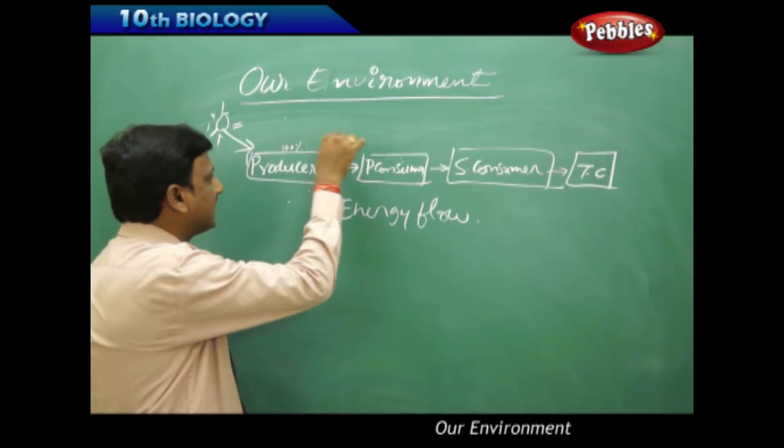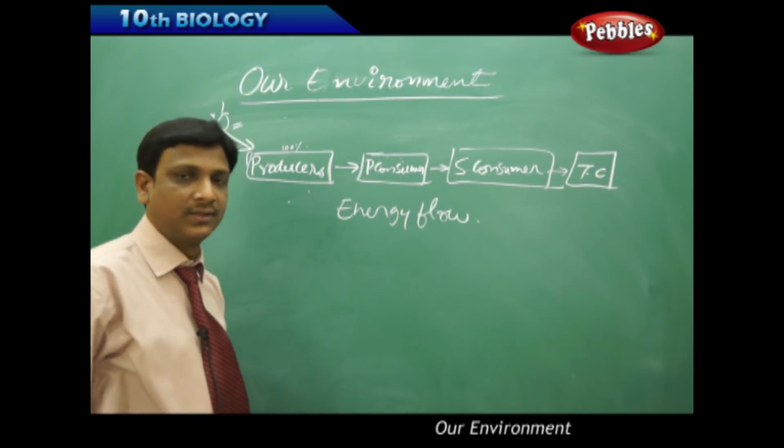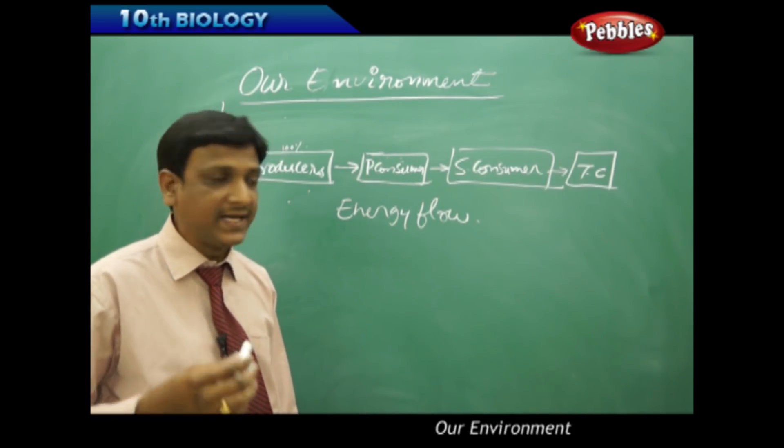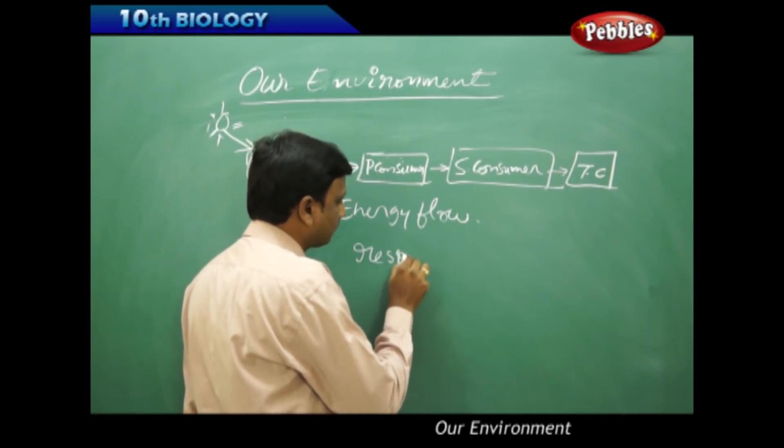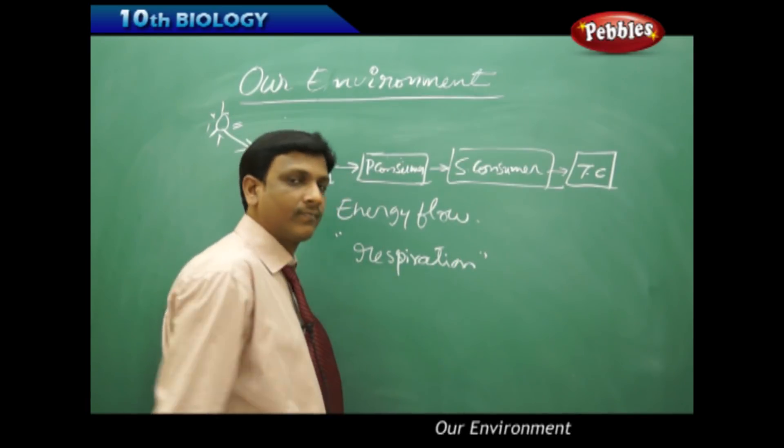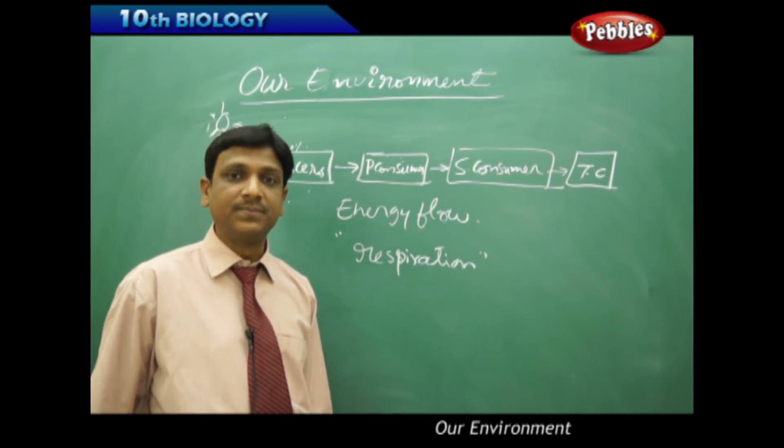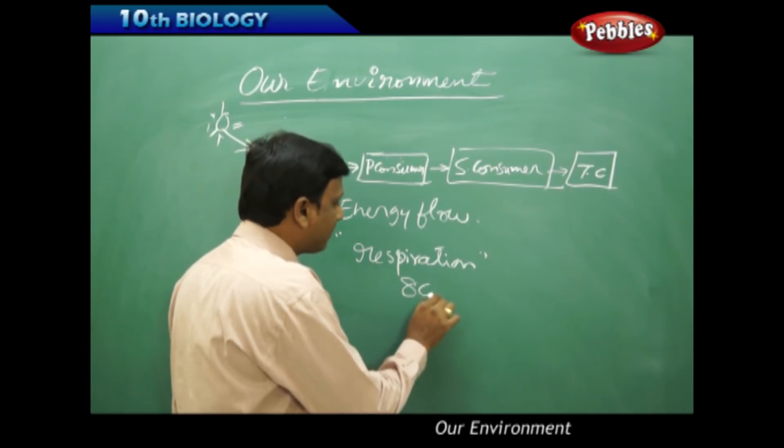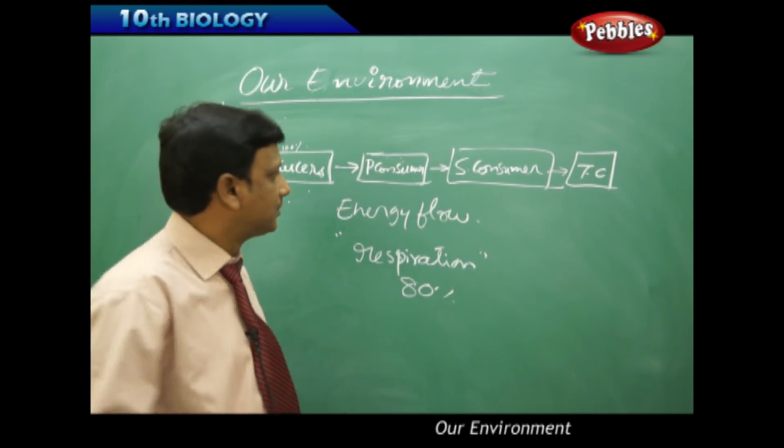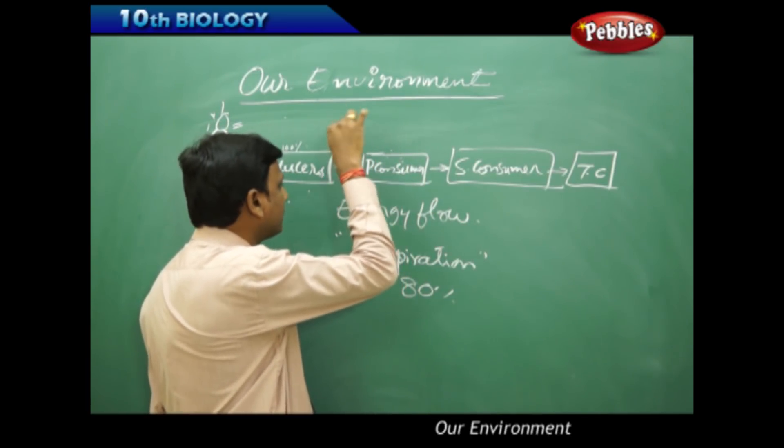Of course, most of the energy is transferred to the primary consumer. But here the consumers are the animals, which carry out a process called respiration. And during the process of respiration, nearly 80% of the energy is dissipated in the form of heat.